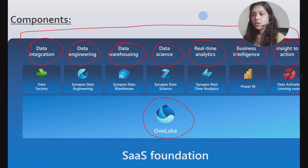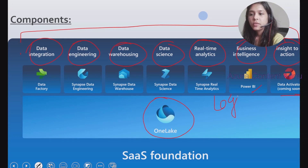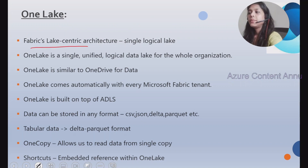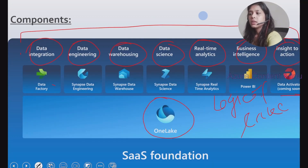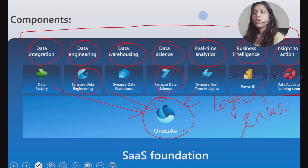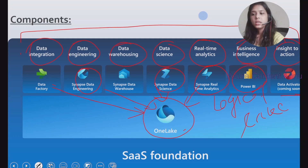The most important thing is something called One Lake. One Lake is basically a logical lake of data inside Fabric — it is Fabric's lake-centric architecture, also called a single logical lake. All the experiences or components of Microsoft Fabric can directly interact with this One Lake. Using a single copy of data in One Lake, you can create data pipelines, train machine learning models, create Power BI reports, or perform data analysis.